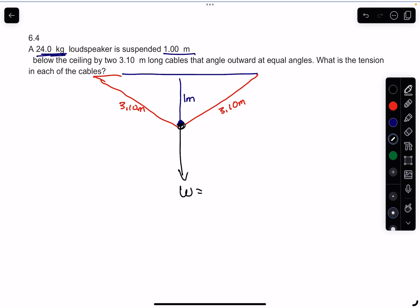This is the weight, and the weight is mg. In this case that's 24 times 9.8, which is 235 newtons. Now if you think about this, we've got the red lines, the tension.